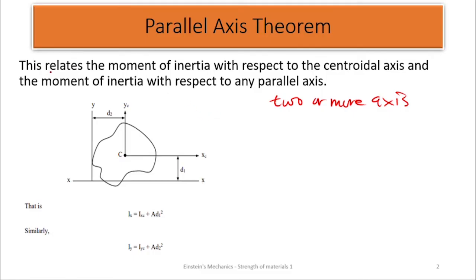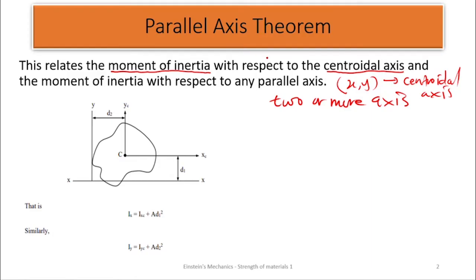How do we go about this? This theorem relates the moment of inertia with respect to the centroidal axis. So one of the axes is always the centroidal axis — the axis passing through the center of the figure. We've also seen how to locate the centroidal axis: once you find the point X and Y, you can locate your centroidal axis. So our reference is always with respect to the centroidal axis, which we know how to locate, and with respect to any other parallel axis.